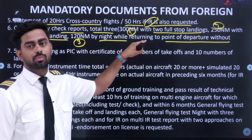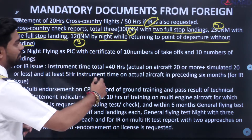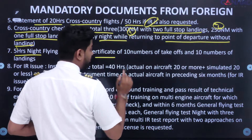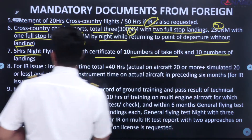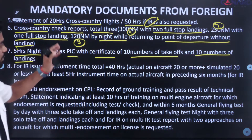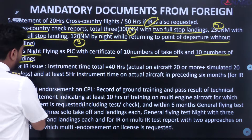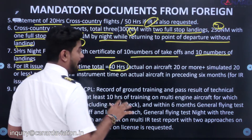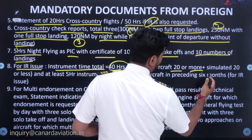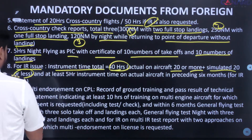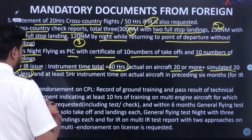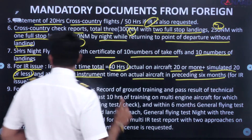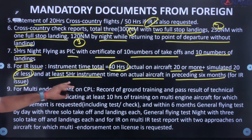You must have these documents in your list of mandatory documents to submit to DGCA. Seventh is five hours of night flying as PIC, with a certificate of 10 takeoffs and 10 landings. For IR issue, your instrument time total should be 40 hours — actual on aircraft can be 20 hours or more, plus simulated 20 hours or less. At least five hours of instrument time must be on an actual aircraft in the preceding six months for IR issue.